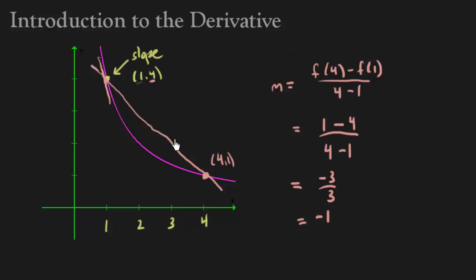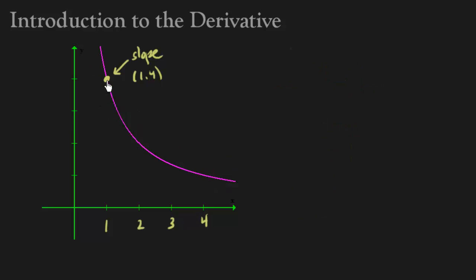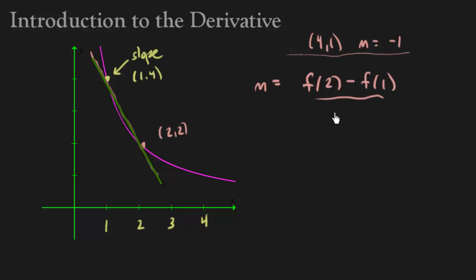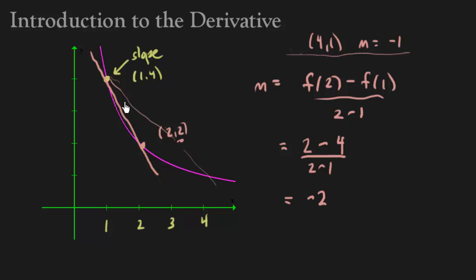I'm going to create another line between our original point (1, 4) and a closer point, (2, 2). The slope is f(2) minus f(1) over 2 minus 1. f(2) is 2 and f(1) is 4, over 2 minus 1, and that gives negative 2. This line was not as steep as the first one, so a slope of negative 2 makes sense.